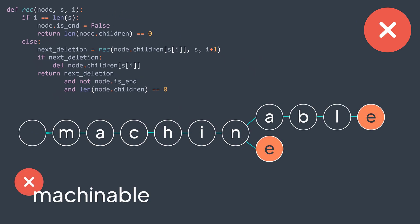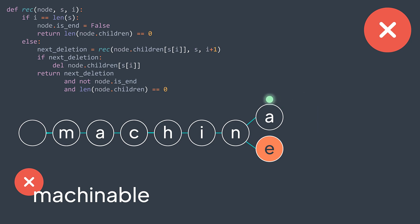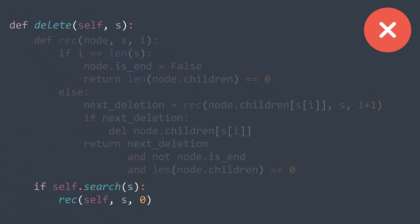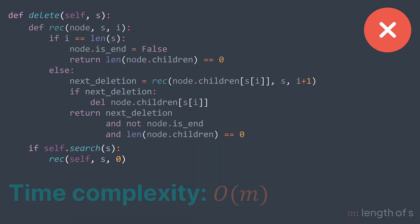For example, to delete 'machinable': we traverse the nodes recursively — M, A, C, H, I, N, A, B, L, E. Base case: we set isEnd to false and return true because the last node has no children. Back at L, the call returned true, we delete the child — it's not isEnd and has no children, so we return true. Same for B, A, N, I — then at H, the function returned true so we delete the child, but the actual node still has children, so we return false. All remaining calls don't delete and return false. We deleted 'machinable' without affecting any other strings. This method also has O(m) time complexity.